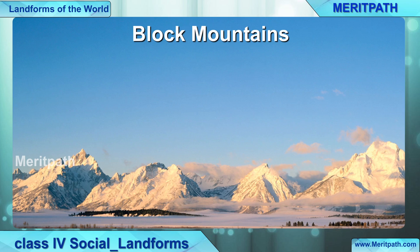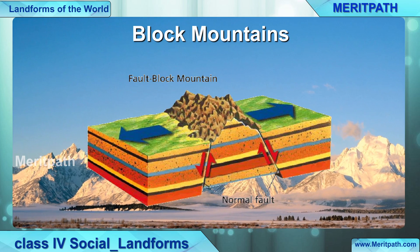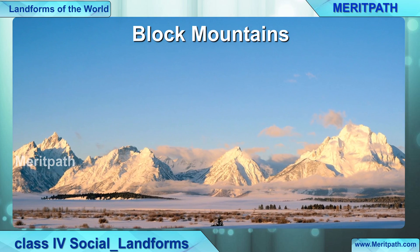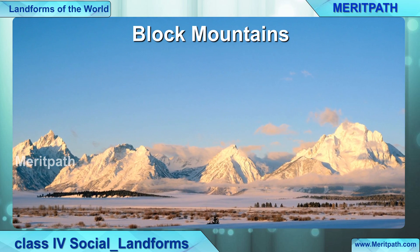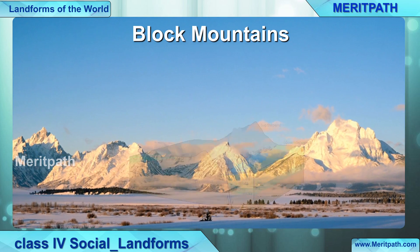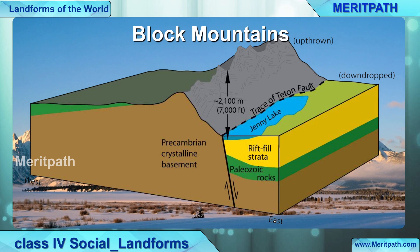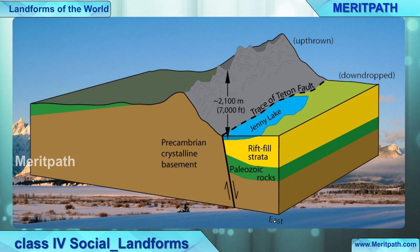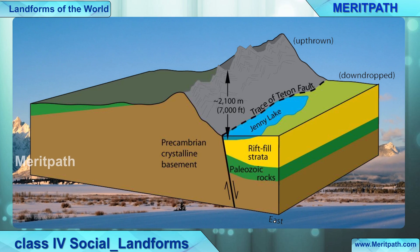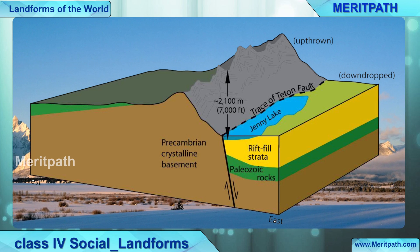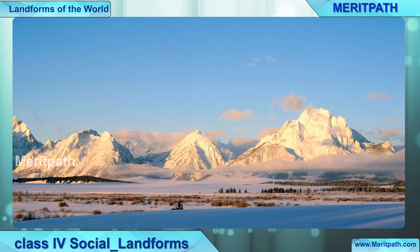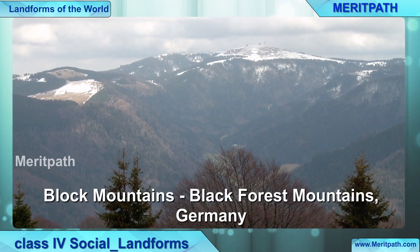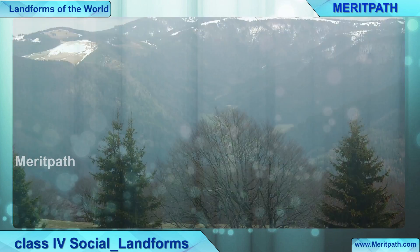Now we will come to block mountains. How are block mountains formed? These are formed by the splitting and sliding of large blocks of land. You can see in the diagram how the blocks of land are sliding and splitting, forming into mountains — these are called block mountains. The Black Forest mountains in Germany is an example of block mountains.